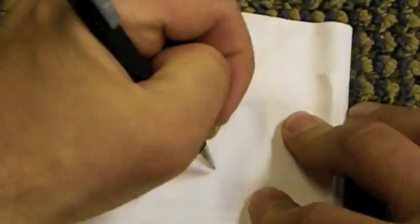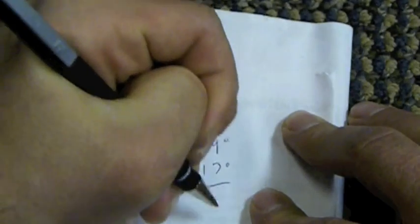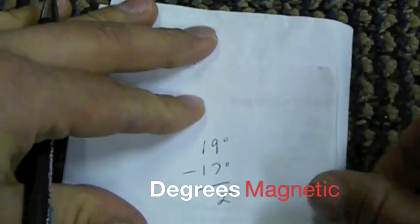So we'll go ahead and do the basic math there. We've got 19 degrees minus 17 degrees, which leaves us with 2 degrees, which is what you will use with your compass.